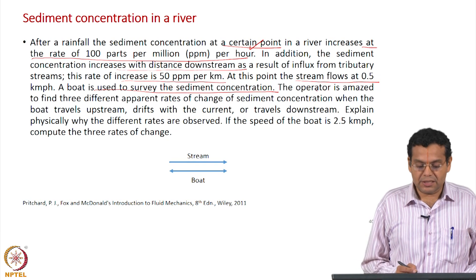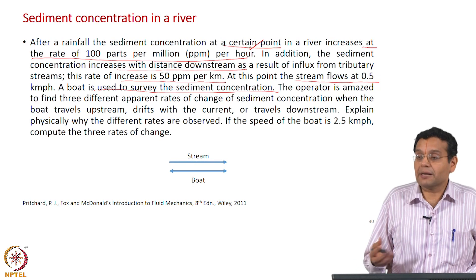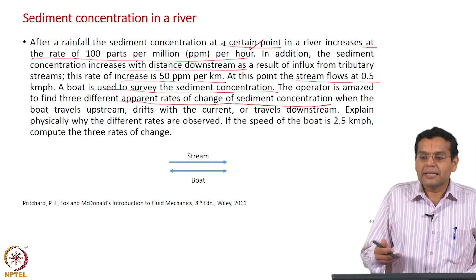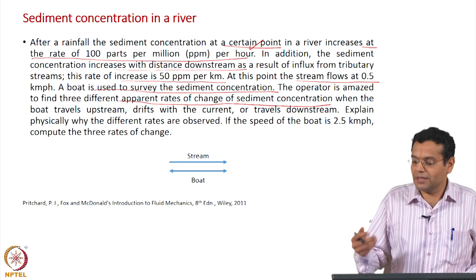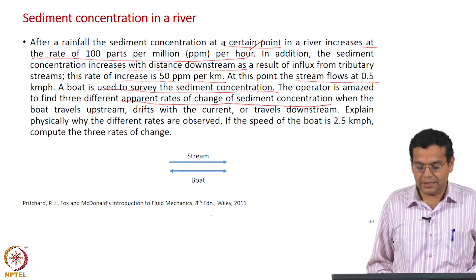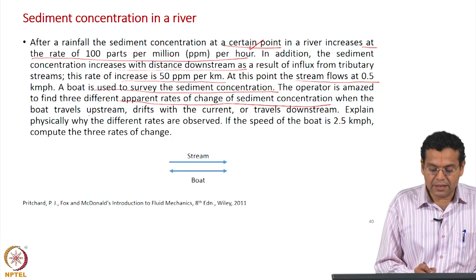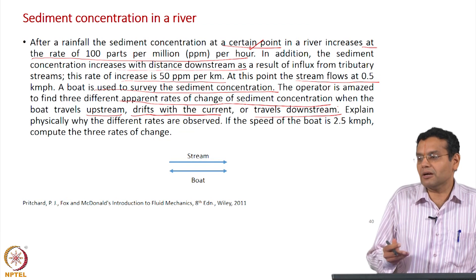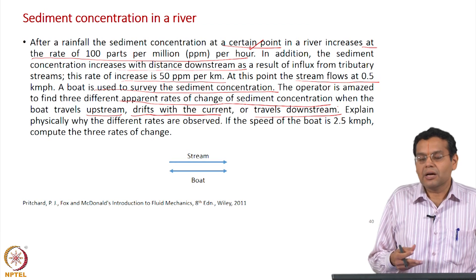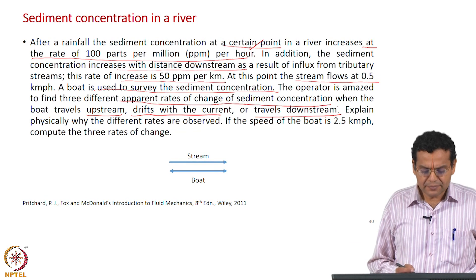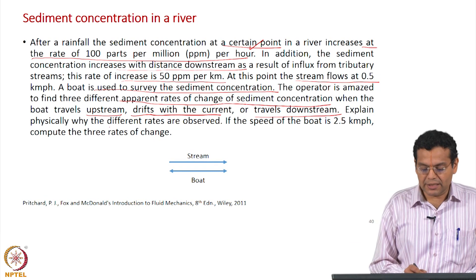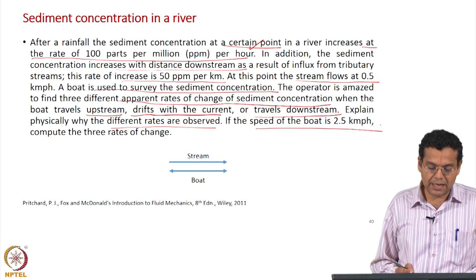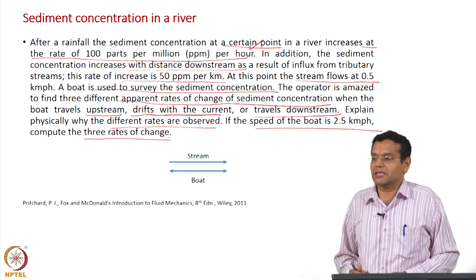What the operator is amazed to find is three different apparent rates of change of sediment concentration — why 'apparent'? That depends on how he is moving. The apparent change of sediment concentration differs when the boat travels upstream, drifts with the current, and travels downstream. The speed of the boat is given as 2.5 kilometers per hour. Compute these three rates of change.